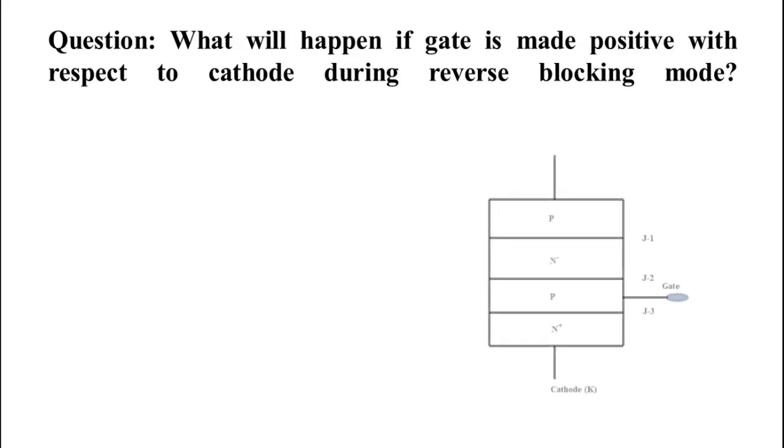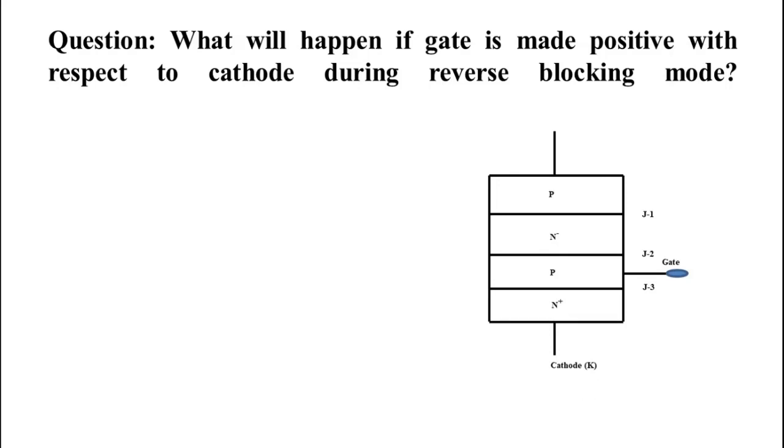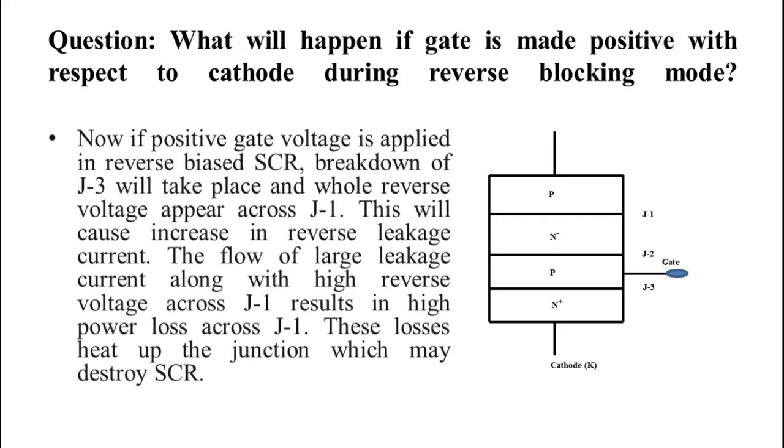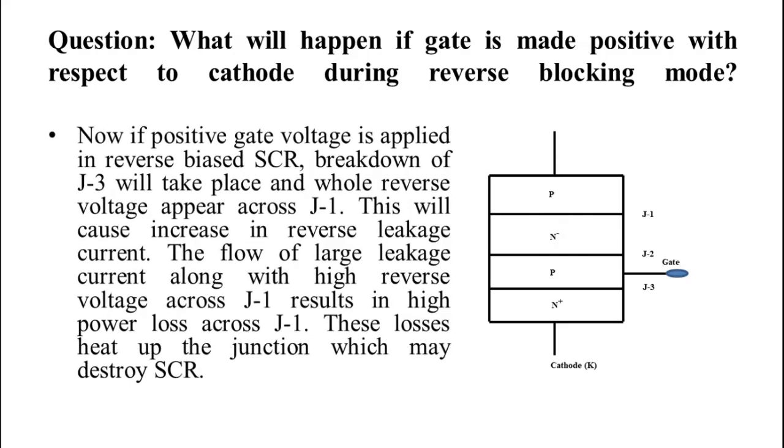The answer is: we know that junction with lightly doped layer on both sides requires large breakdown voltage and junction with highly doped layer on both sides requires less breakdown voltage. When reverse voltage is applied to SCR, then outer two junctions J1 and J3 are reverse bias and junction J2 is forward bias. This junction is forward bias.